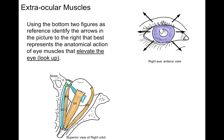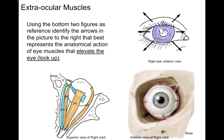Using the bottom two figures as reference, identify the arrows in the picture to the right that best represents the anatomical action of the eye muscles that elevate the eye to look up. There are our two pictures. There's the axis of the eyeball and there's the axis of the orbit. When the superior rectus muscle contracts, it causes the eye to look up and in, and the inferior oblique causes the eye to look up and out.